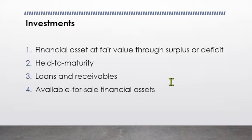Subsequently, financial asset at fair value through surplus or deficit is measured at fair value, and any changes in fair value are recognized in surplus or deficit. Held to maturity and loans and receivables are subsequently measured at amortized cost using the effective interest method — which we will not discuss further as it is assumed you have already learned it under financial accounting.